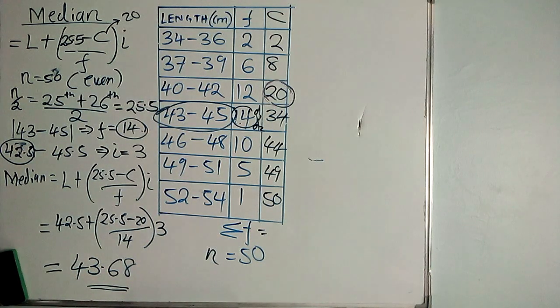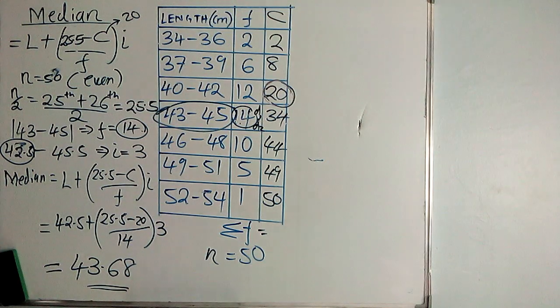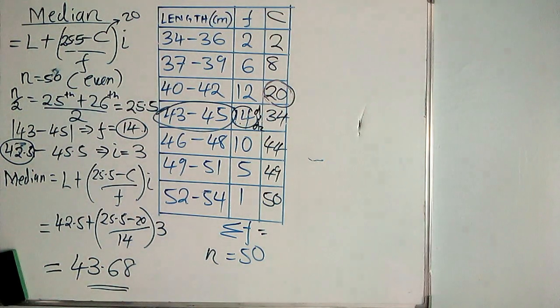When finding the median, you must always check whether your data is odd or even. When n is odd, it means there is one median term.